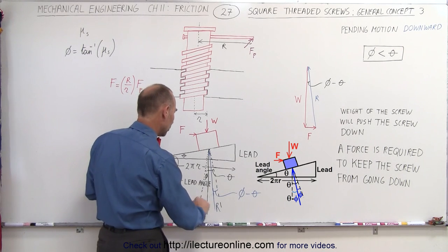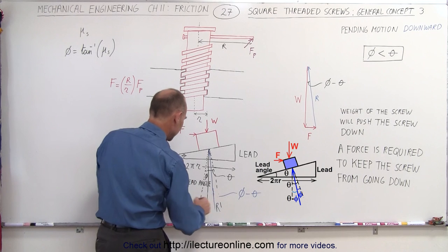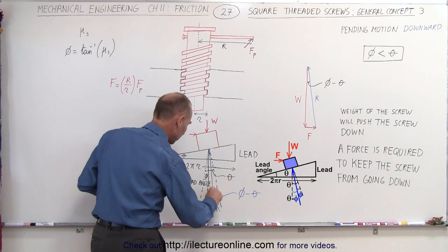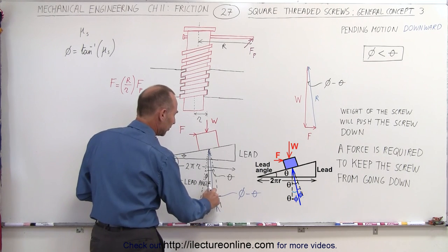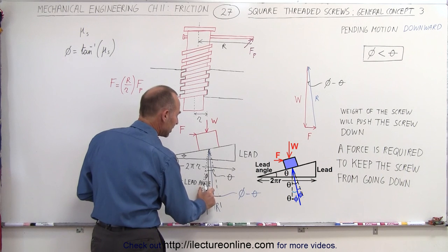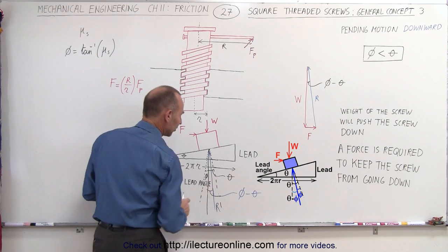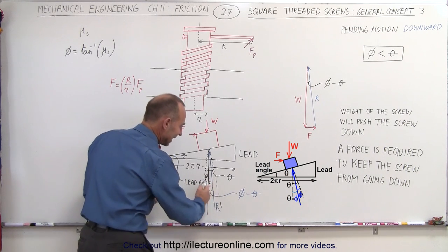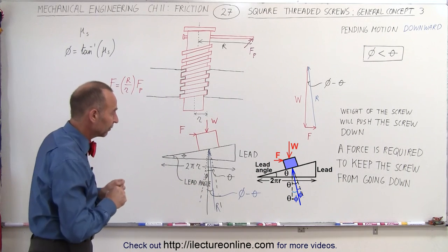Oh, I'm pointing to the wrong angle here. This should be the angle over here. We should be pointing to this angle right here. So this angle here is equal to phi minus theta. That gives us this angle, which is actually a negative angle when you think about it, relative to the vertical.